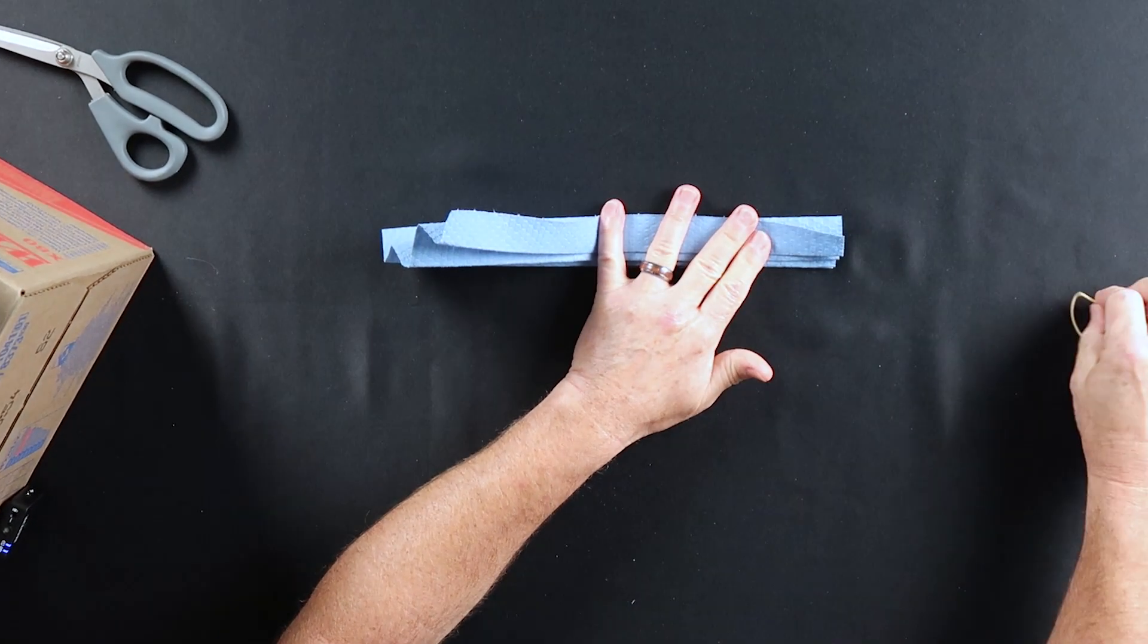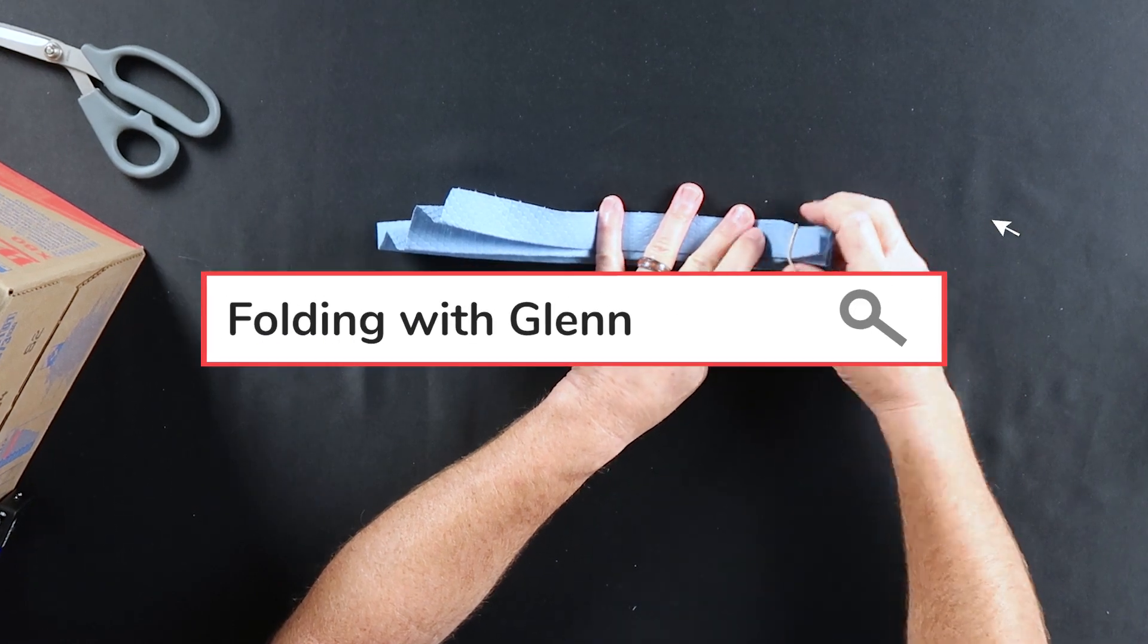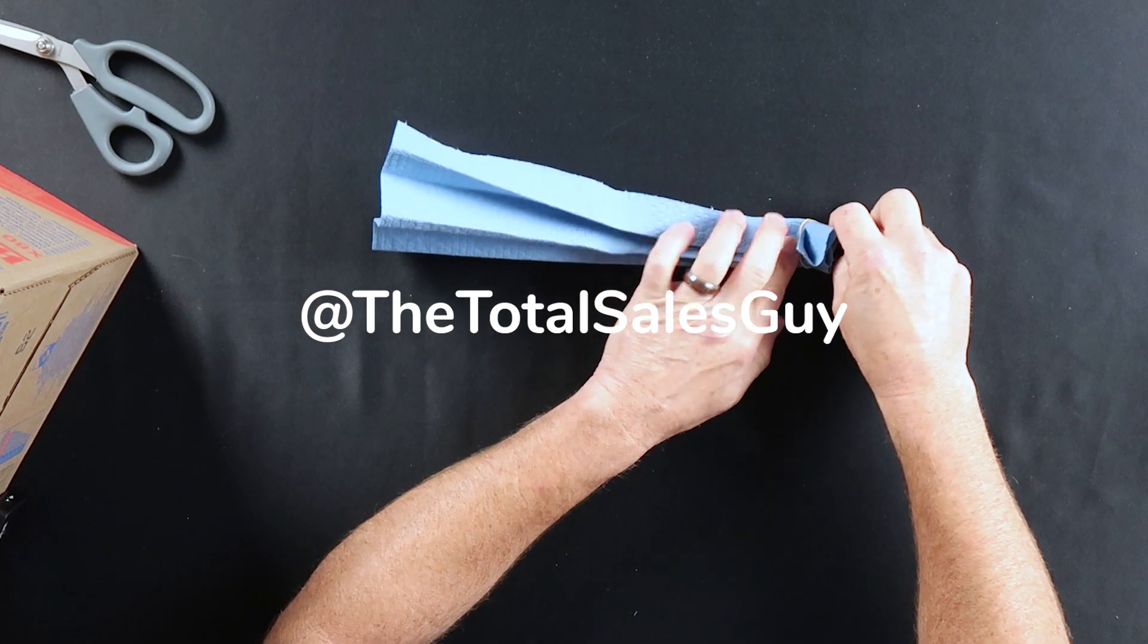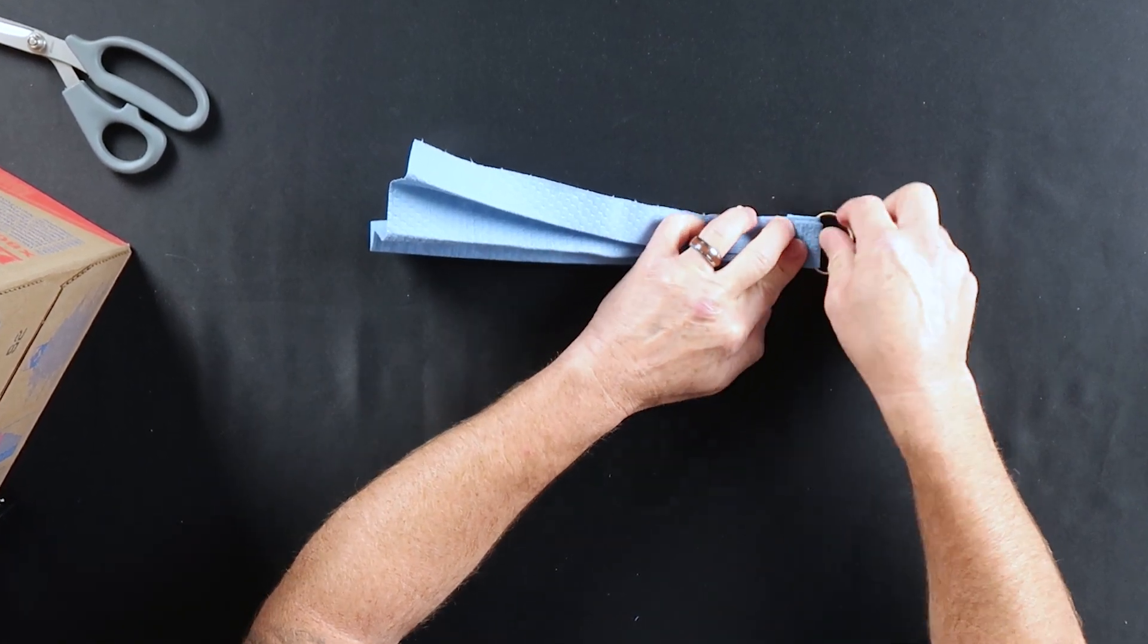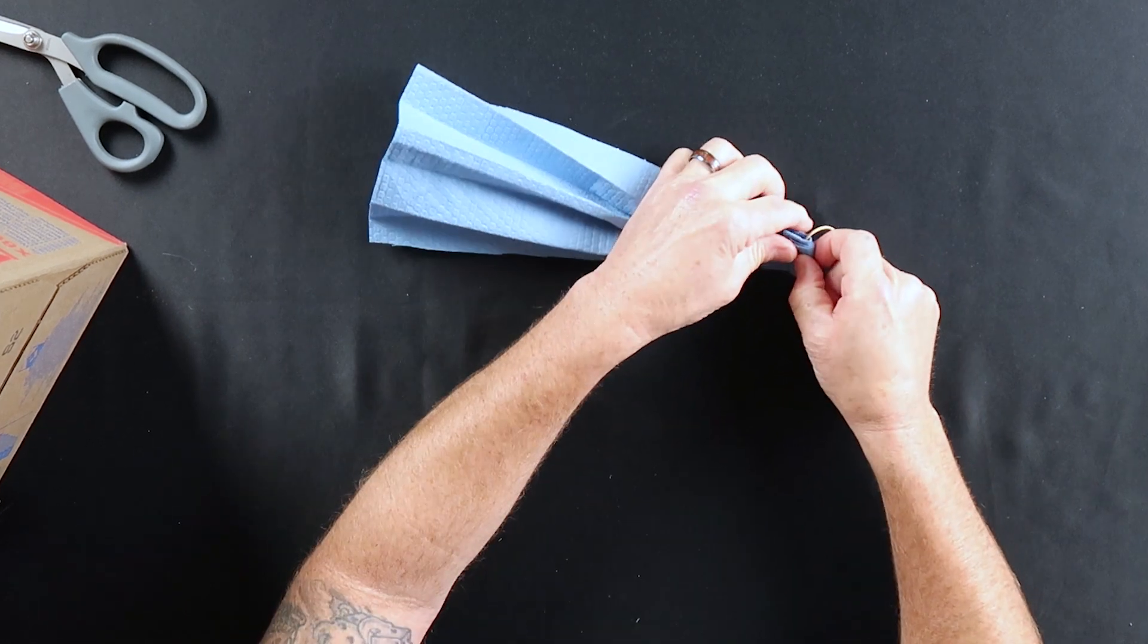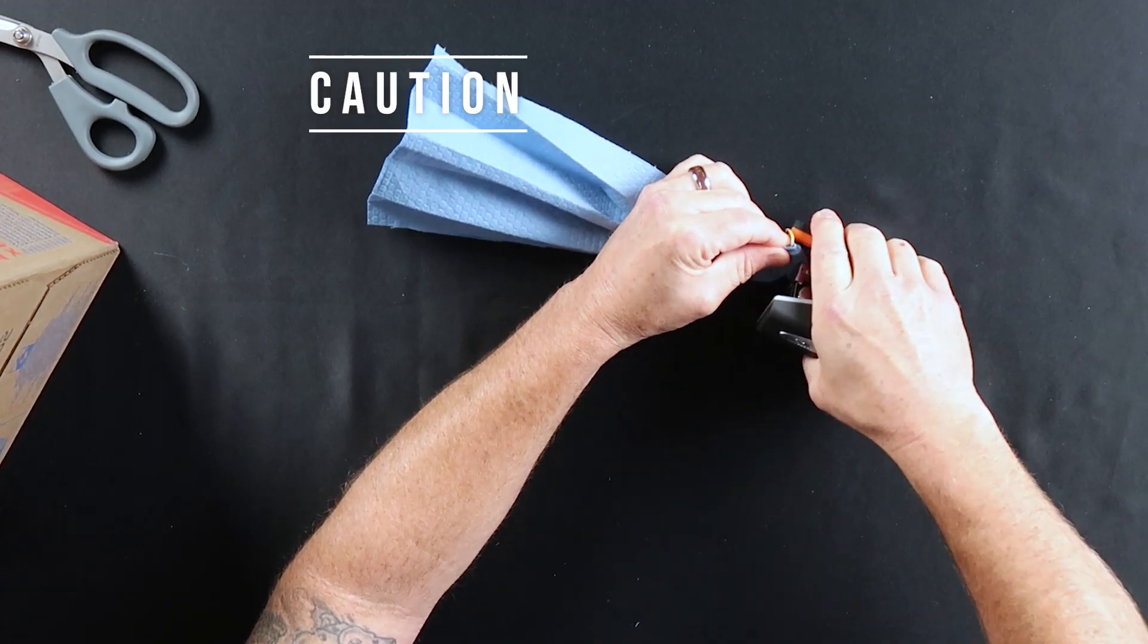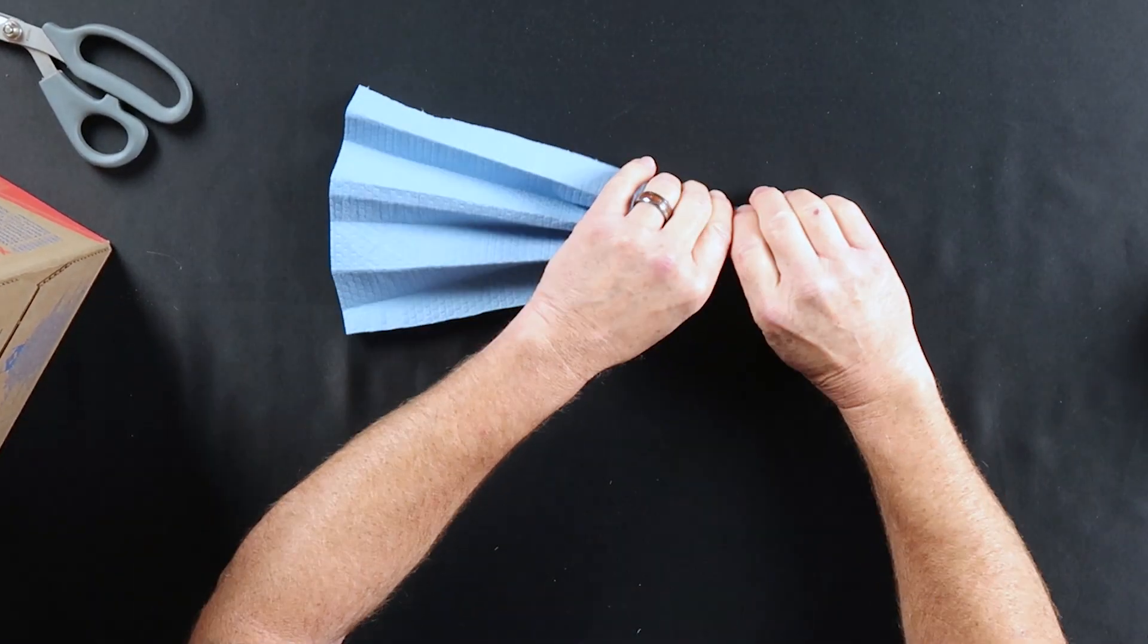Then you're going to take one of your rubber bands, feed it through, give it a little bit of a fold at the end. Take your stapler. I put a couple in there just to make it sturdy.